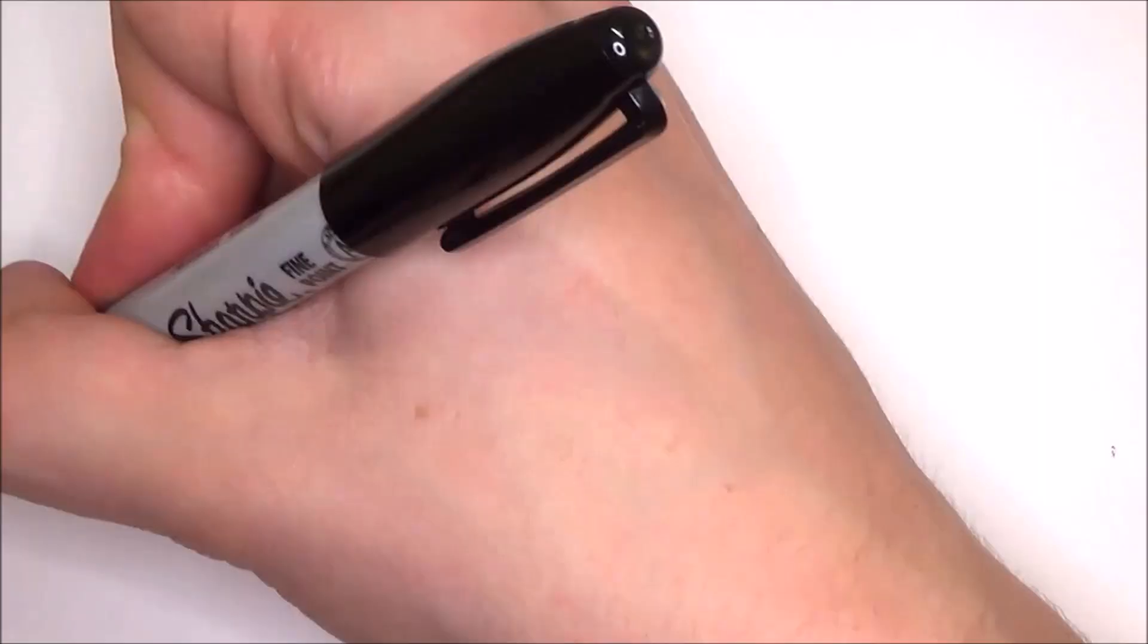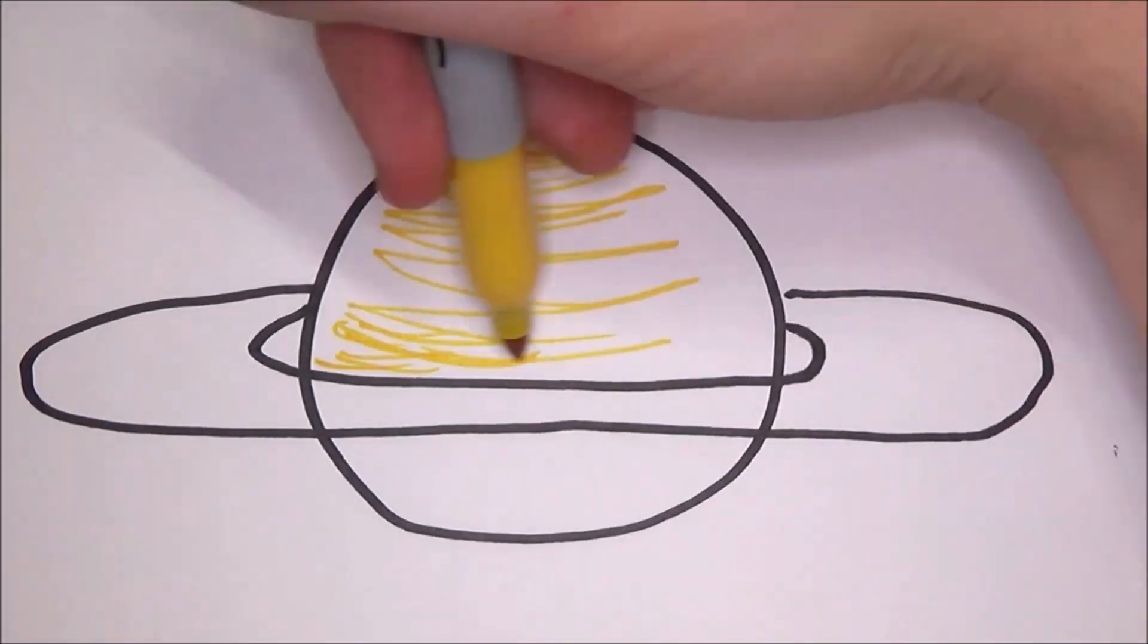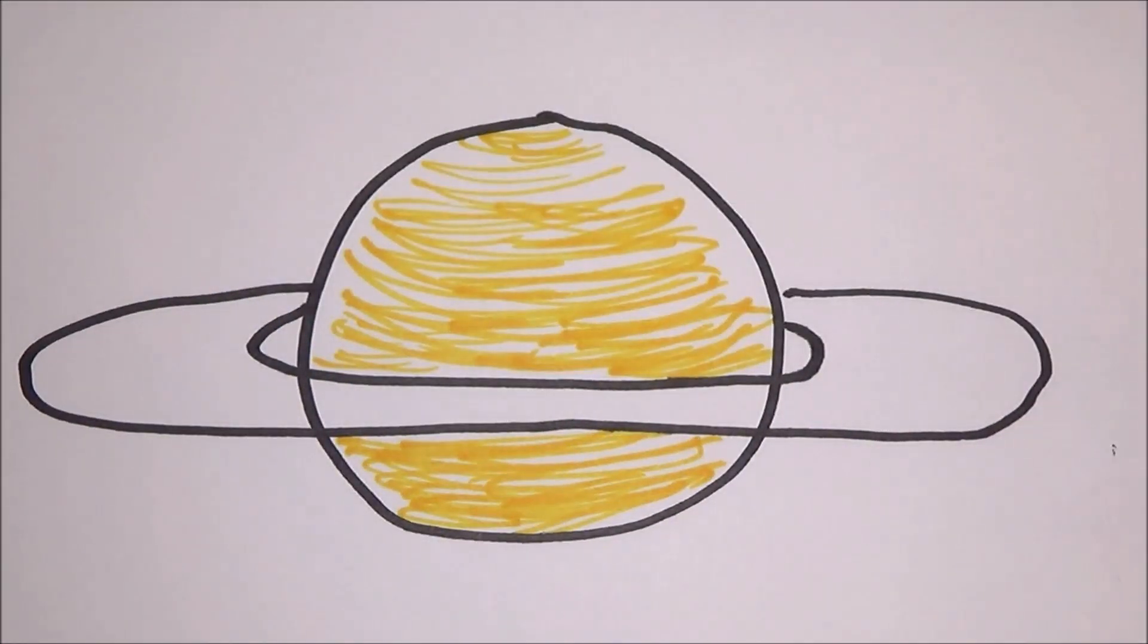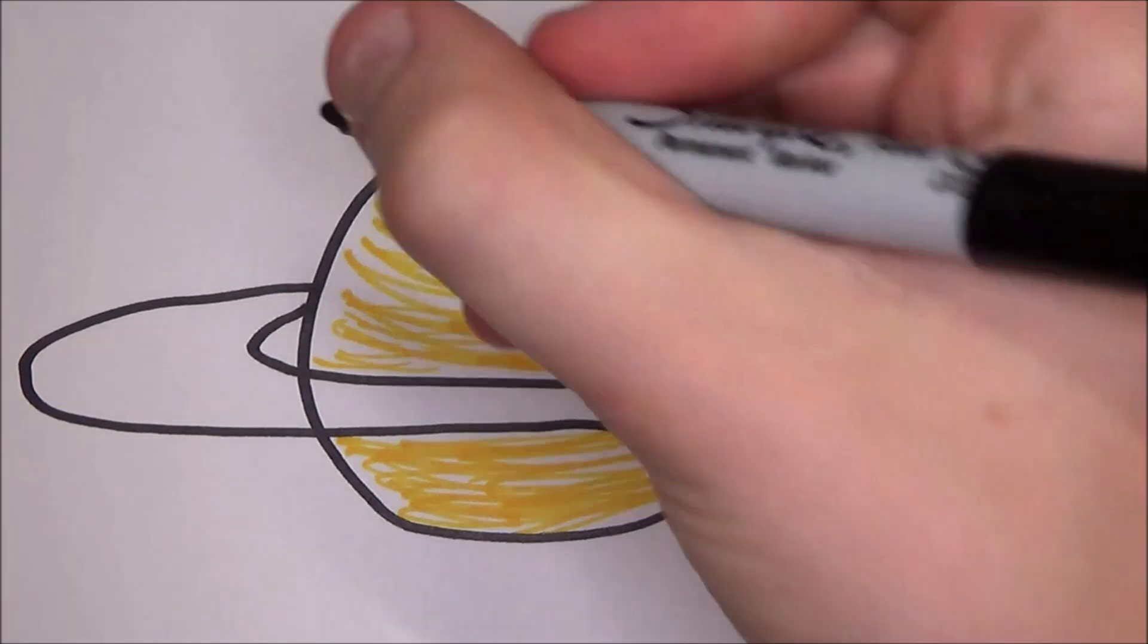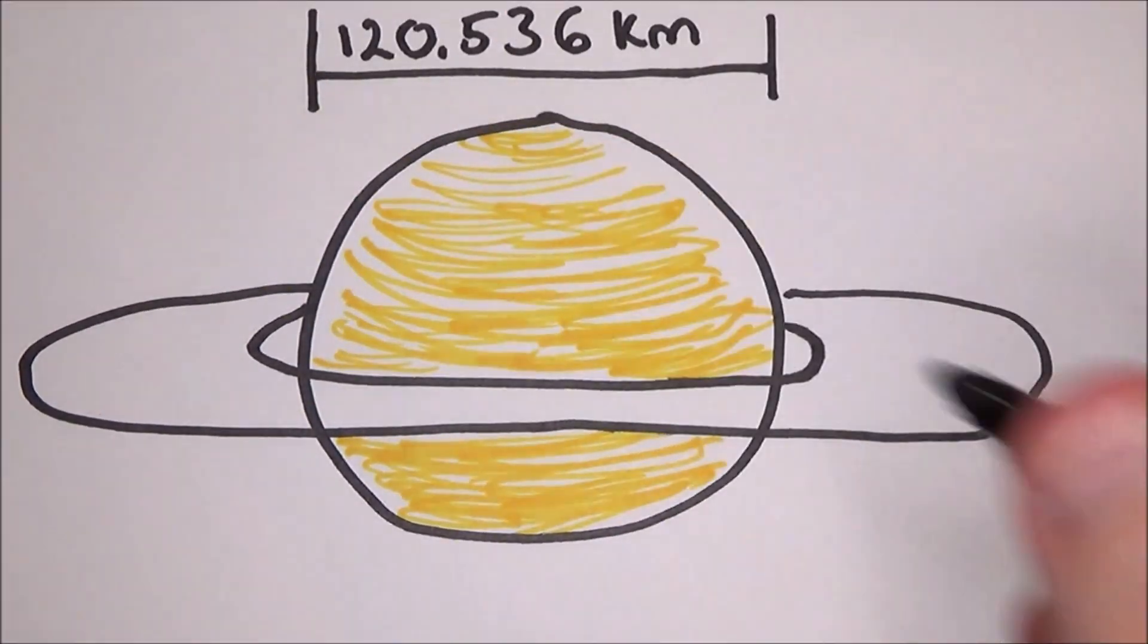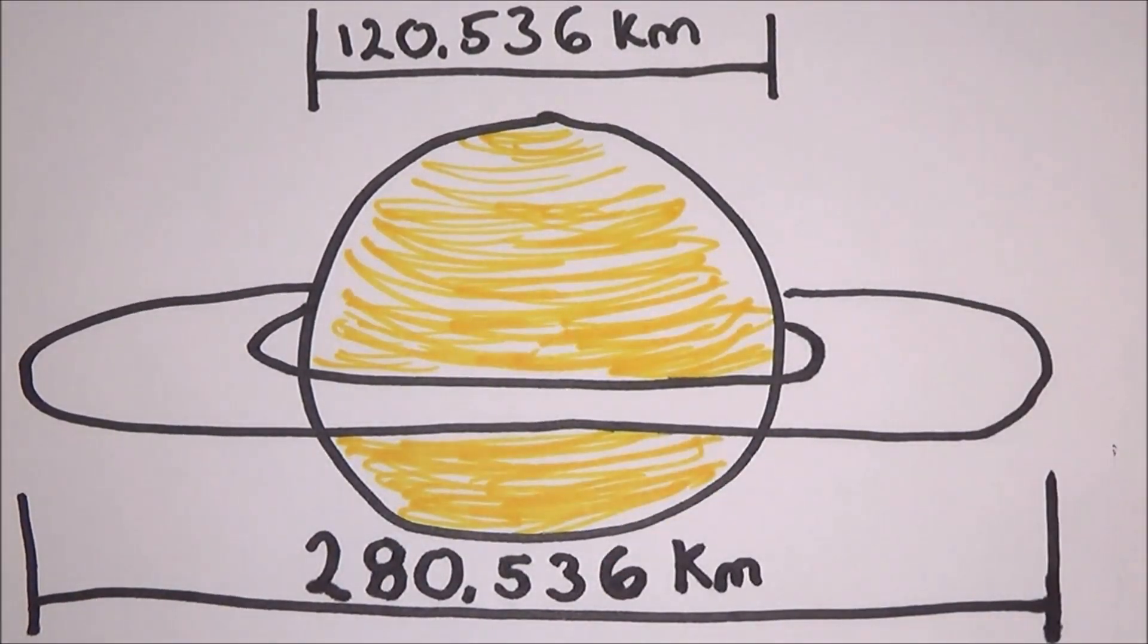However, Saturn being approximately 120,536 km across, you are going to need a really large paddling pool in order to put Saturn in it, never mind what the gravity of that much water would actually do to Saturn itself.